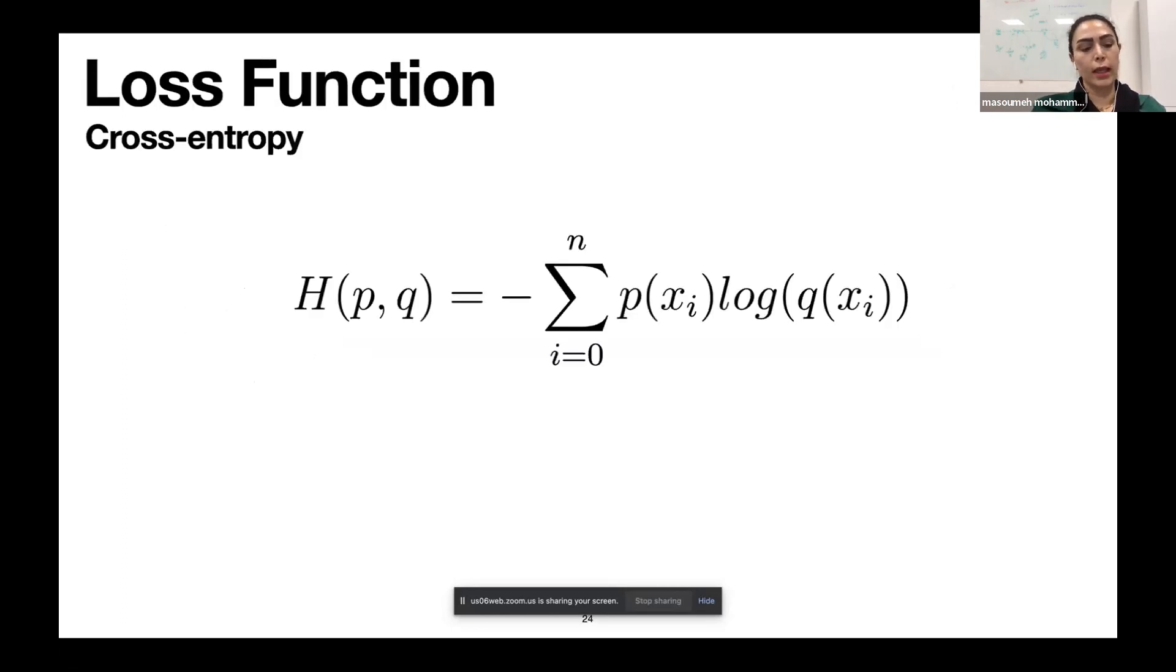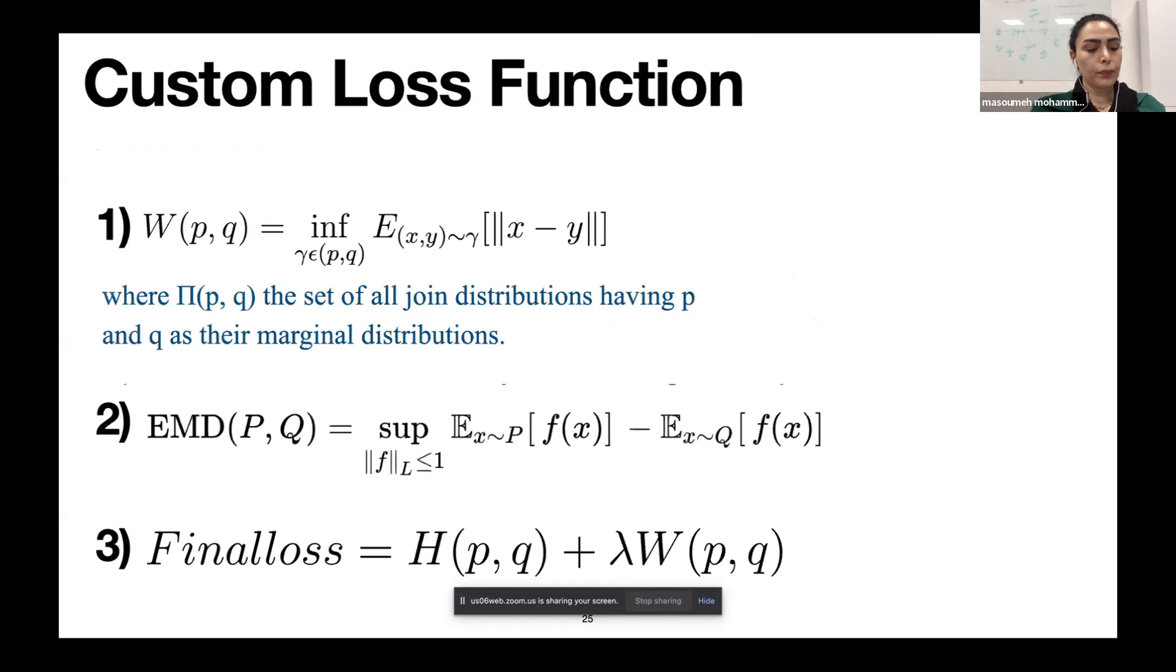And finally, utilizing a custom loss function which results in our method outperforming traditional and state-of-art models. Cross-entropy measures the difference between the discovered probability distribution of machine learning classification model and the predicted distribution. Categorical cross-entropy is used in multi-class classification. As I mentioned earlier, we use three kinds of labels here in this study: negative, positive, and neutral. So we select cross-entropy.